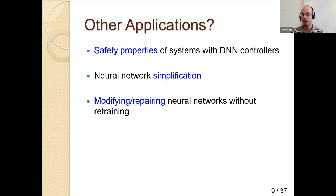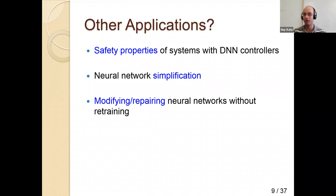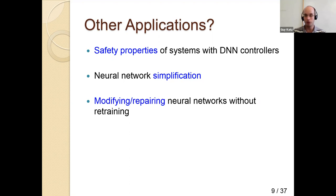Yet another application is modifying and repairing neural networks. If a bug is discovered or your specification changes, retraining is expensive and you may not have access to training data. There's now a market where someone sells you a nearly-trained network and you do fine-tuning. You can use verification to modify an existing neural network in a provably minimal way — making the smallest possible change to correct it. All of these applications reduce to neural network verification.